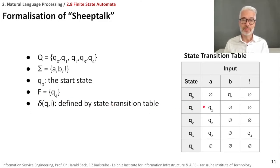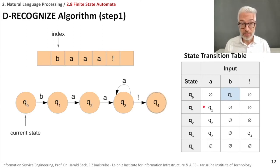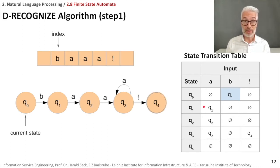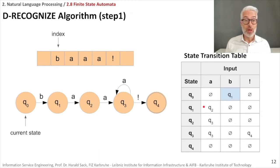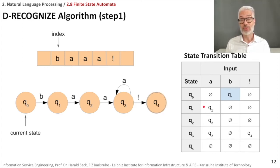There is a real algorithm that describes how a finite state automaton recognizes and processes a string — it is called D-Recognize, and it works quite simply. We have our finite state automaton, the current state which starts as the start state, the input tape, and the position of the index indicating where we start reading. The start state is q sub 0 and the first letter to be read on the input tape is 'b'.